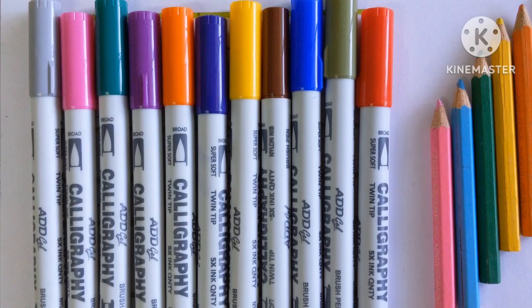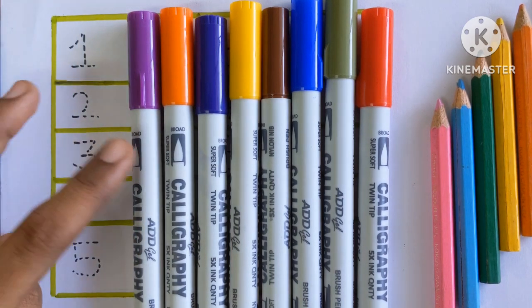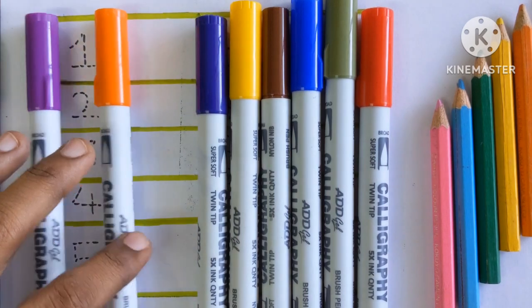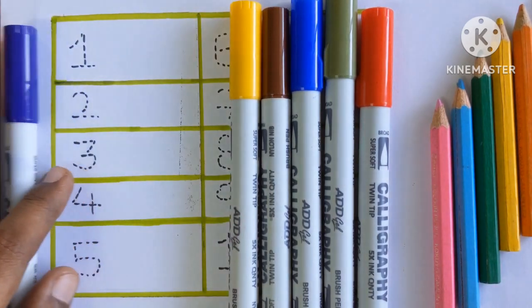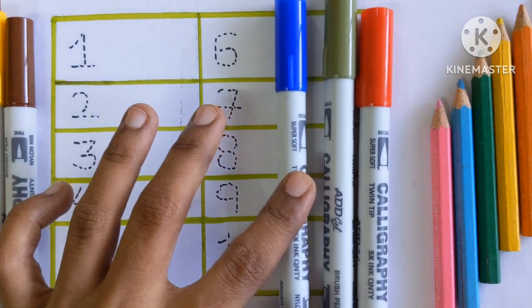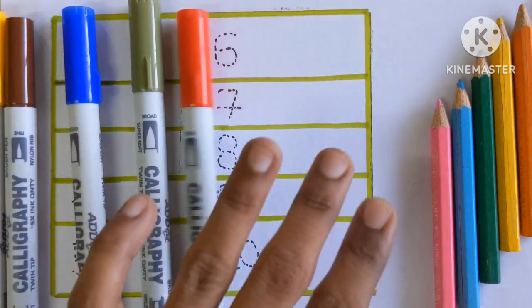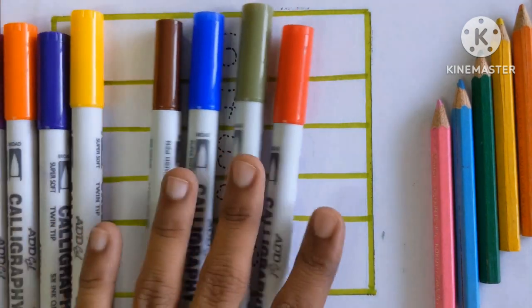Let's learn some color names. Gray color, pink color, green color, purple color, orange color, violet color, yellow color, brown color, blue color, olive green color and red color. Let's start the video.